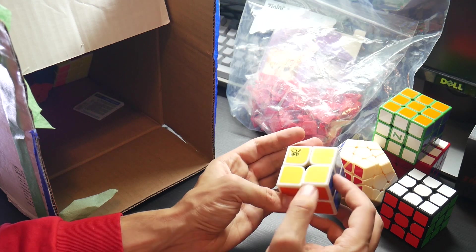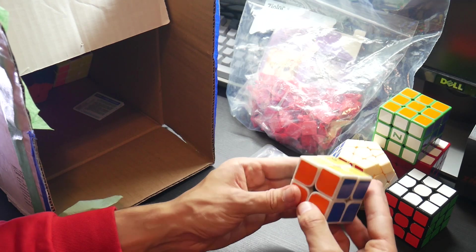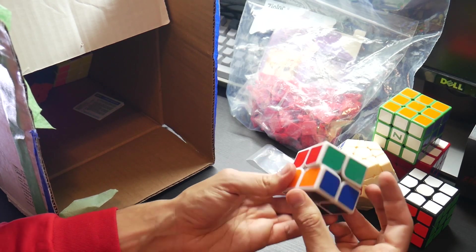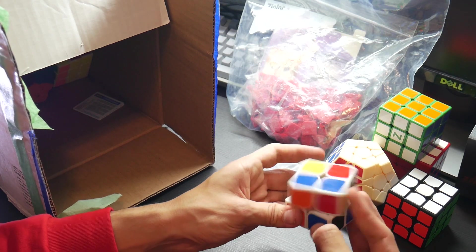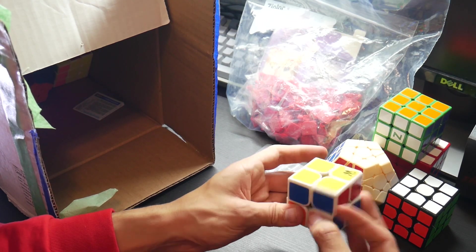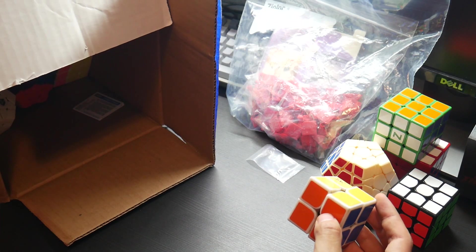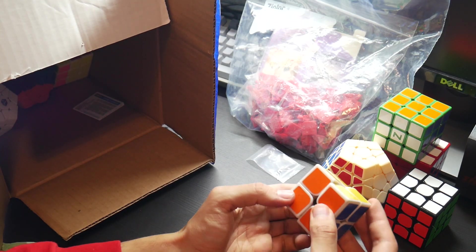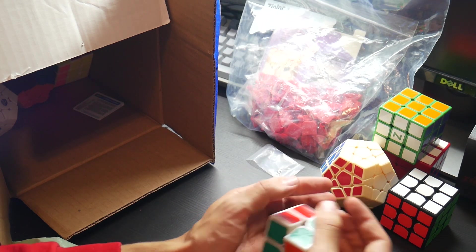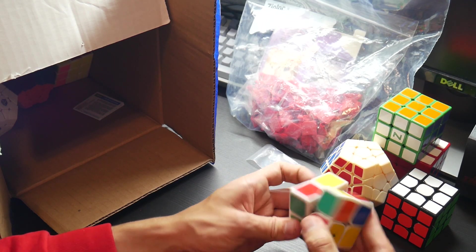All the stickers are all wrecked on it. I remember a few years back the Zanchi 2x2 was super desirable. People were paying a decent amount of money to get used Zanchi 2x2s just because of how good I think the plastic is and how it turns. It's such a deep sounding puzzle.